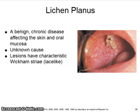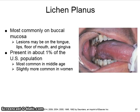Lichen planus is a benign chronic disease affecting the skin and oral mucosa. The cause is unknown. Lesions have a characteristic Wickham's striae — in other words, they have lace-like or spider web-like stripes or lines. It is most commonly seen on the buccal mucosa, but lesions may also be on the tongue, the lips, the floor of mouth, and the gingiva.